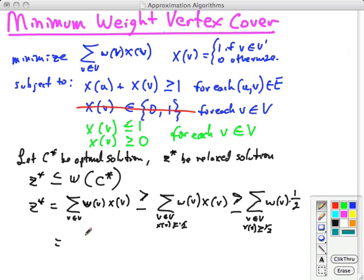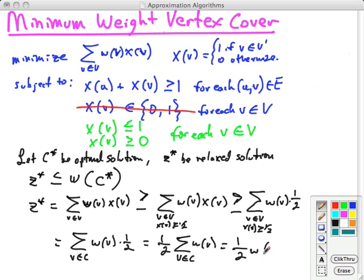And now we can move things around a little bit better. We can say, well, that's going to be equal to v in the cover set, because these are precisely the vertices that ended up in the cover set, v in C, W(v) times 1/2, and we can now move that 1/2 out. So this is 1/2 the sum of v in the cover set of the weights, which of course is 1/2 the weight of the cover set that we actually found, C, not C*. So this gives us, summarizing this whole chain here, Z* is 1/2 W(C).